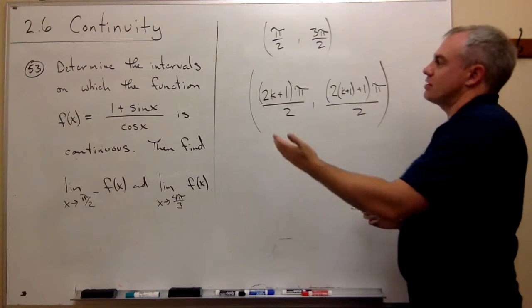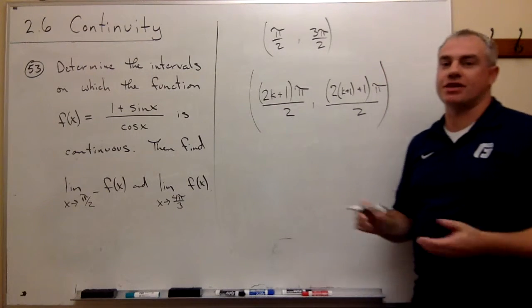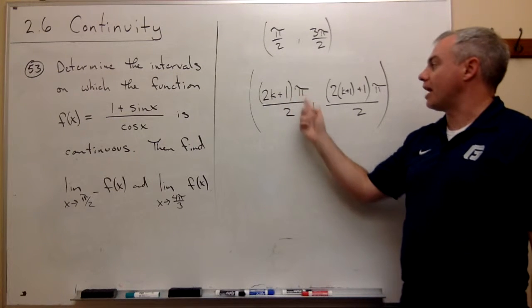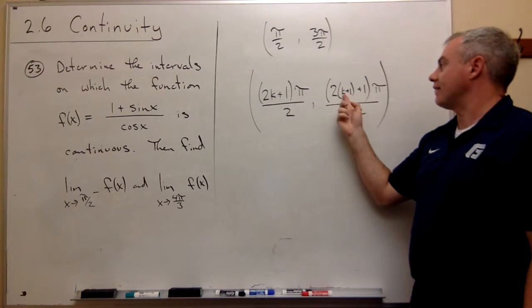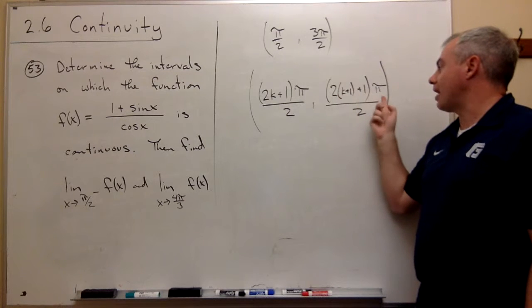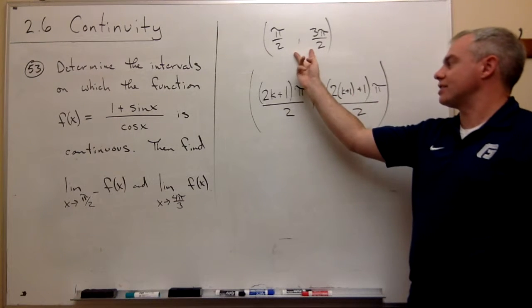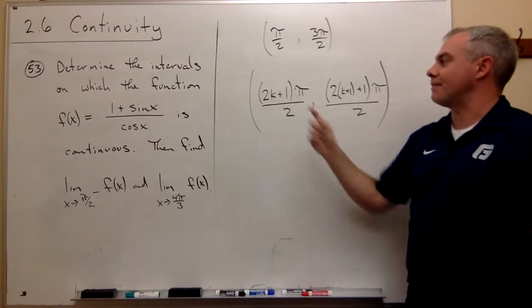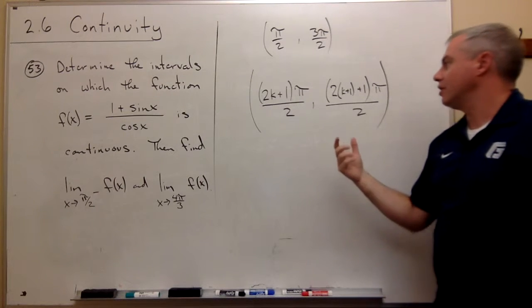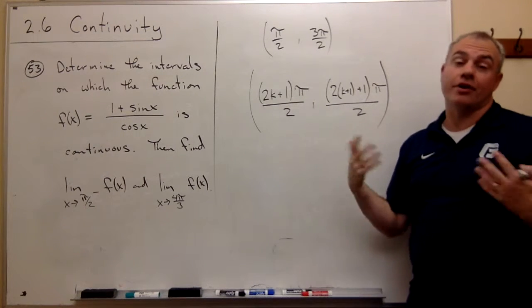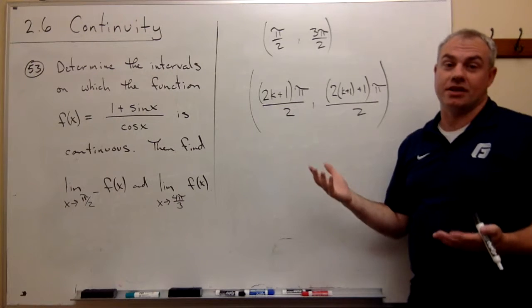So notice what happens here if k is 0. If k is 0, I get 1 pi over 2. And if k is 0, I get 3 pi over 2, exactly this interval. But any k that I put in for any integer would actually give me another interval on which this thing is continuous.